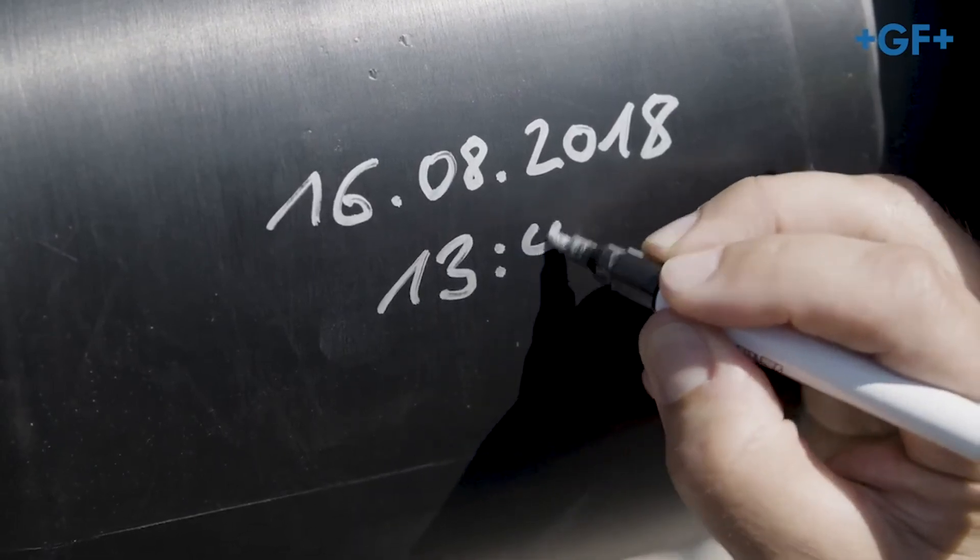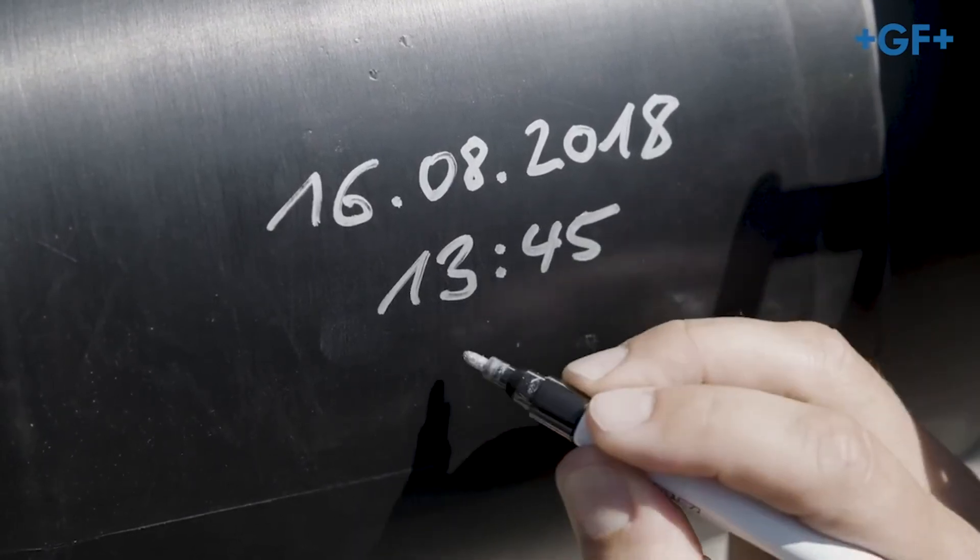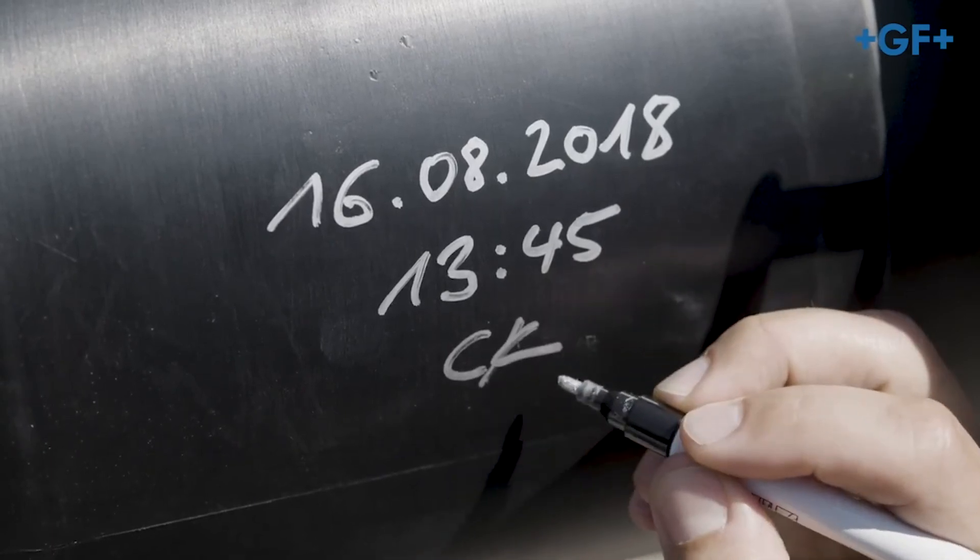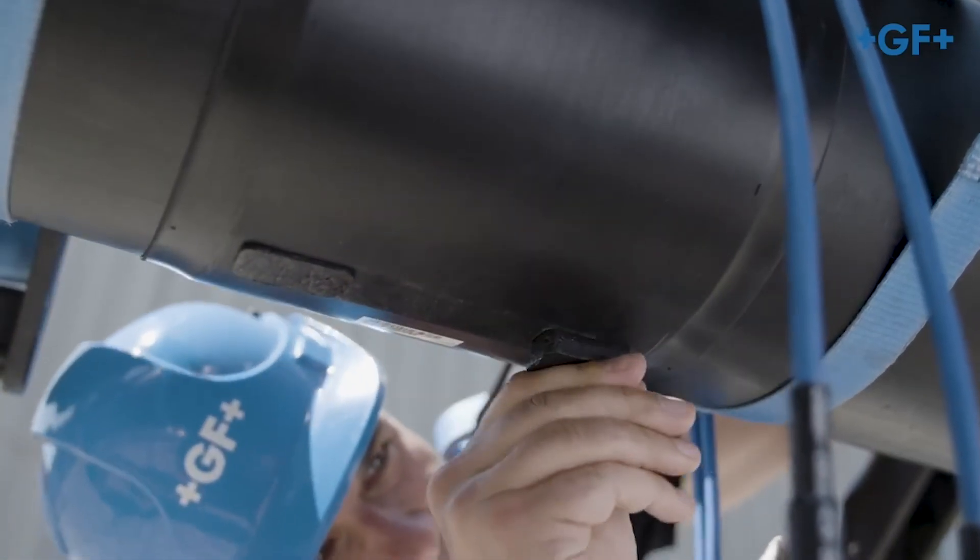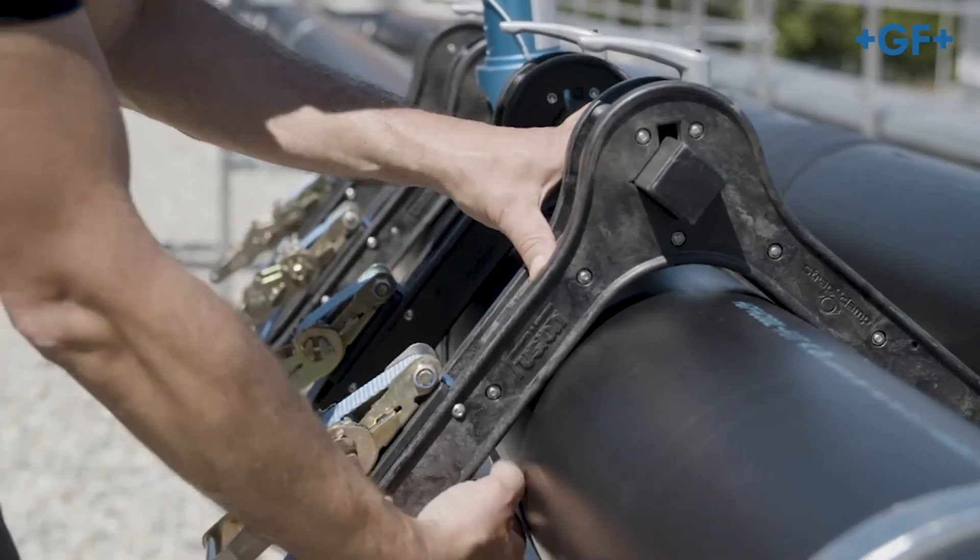Make sure there's no tension and that the position of the fitting does not change before the cooling time has elapsed. Now, place the insulation plugs on the weld contacts. After that, remove the clamp.